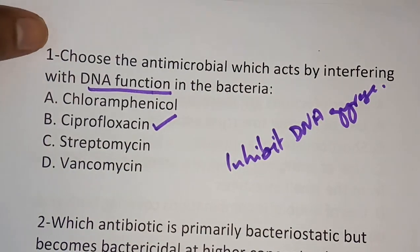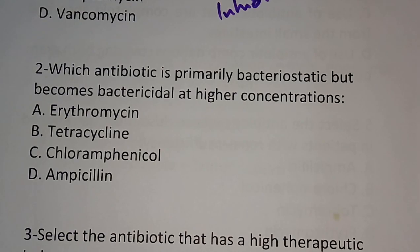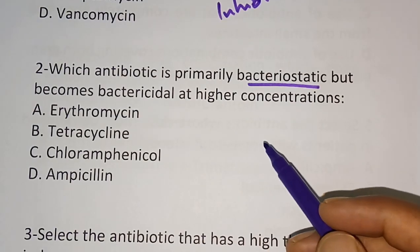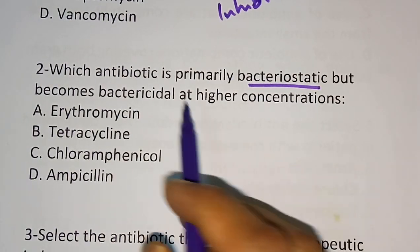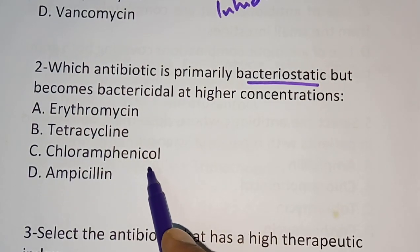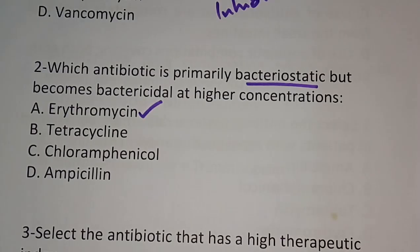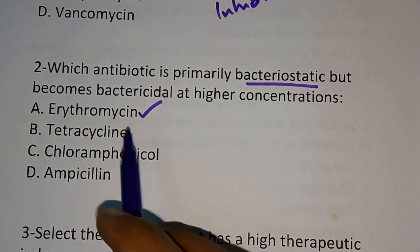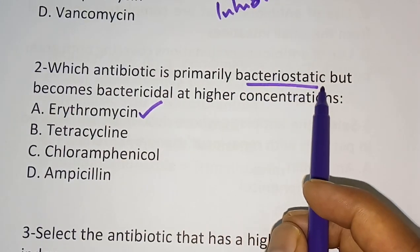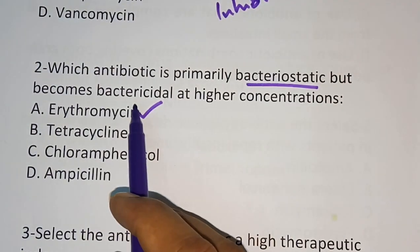Question number two: which antibiotic is primarily bacteriostatic but becomes bactericidal at higher concentration? Options are: erythromycin, tetracycline, chloramphenicol, ampicillin. The correct answer is erythromycin — a macrolide antibiotic. It is primarily bacteriostatic, but when given at higher concentrations it acts as bactericidal.